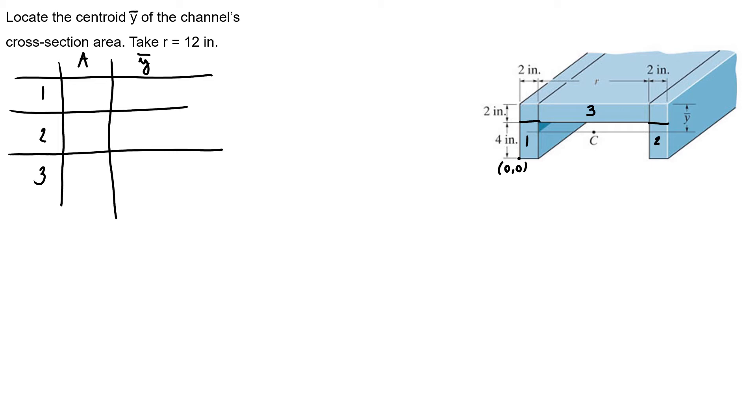So, 1 is 4 times 2, 8 inches square, and my height is the middle of my rectangle, so 2 inches. Same for number 2, because it's an exact figure, so 8 and 2.